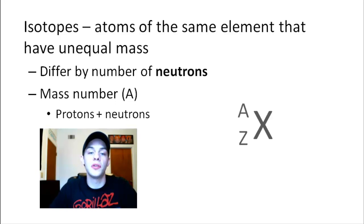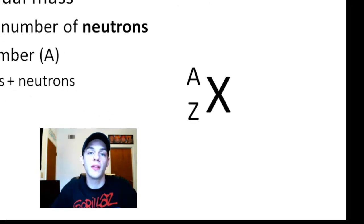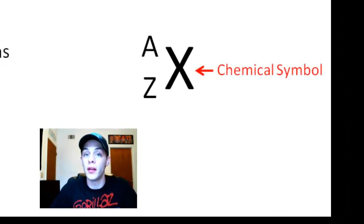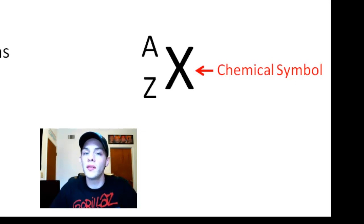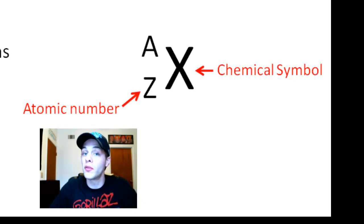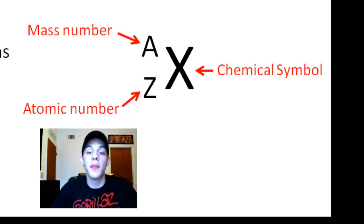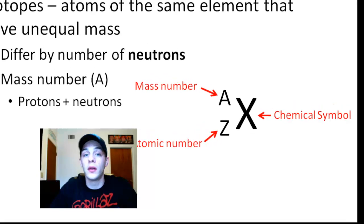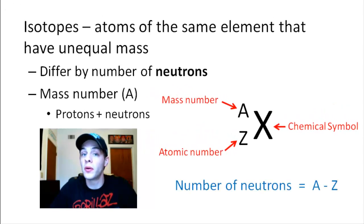A commonly used notation looks like this: the uppercase X in the center is the chemical symbol of the element, which is unique to that element — no two elements have the same chemical symbol. The uppercase Z, a subscript in front of the X, is the atomic number, which is the number of protons in the nucleus and is also unique to the element. The uppercase A is the mass number. To get the number of neutrons a particular isotope has, you take A, the mass number, and subtract the atomic number Z.